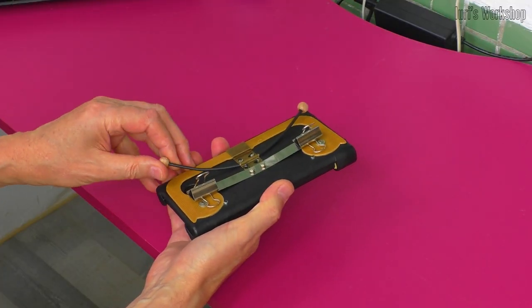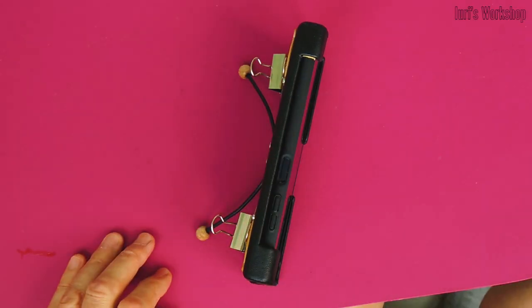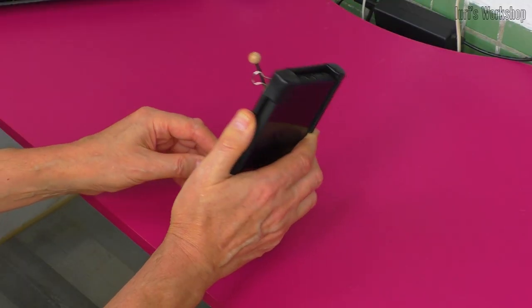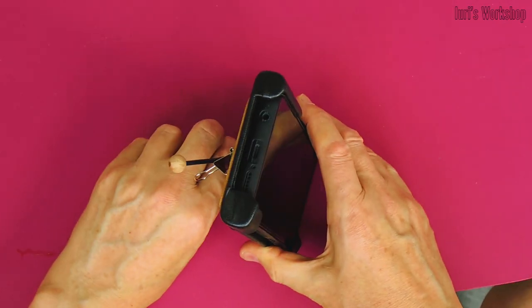In a matter of seconds, you can turn this gadget into a stand for a smartphone and set an arbitrary angle of inclination for both horizontal and vertical orientation of the screen.